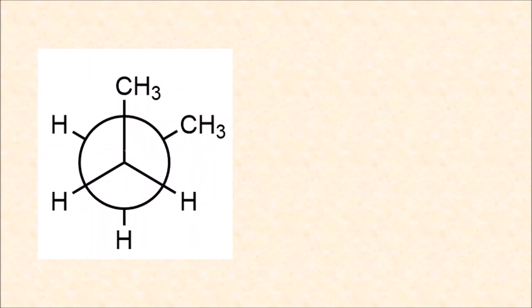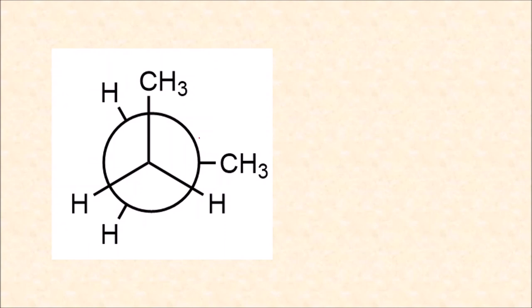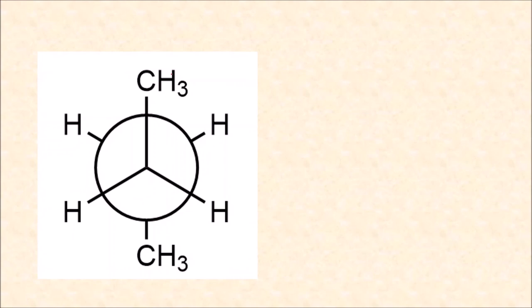In the next conformation, the total angle is 360° divided into three equal parts of 120°, so the dihedral angle between the methyl groups is 60°. This is in the above half of the circle — syn — and at 60° which lies in the clinal region, so it is called synclinal. In the next structure, the angle between the two methyl groups is 120°. Now we are in the below half of the circle — anti — and in the clinal region, so it is called anticlinal.